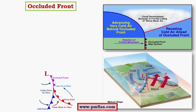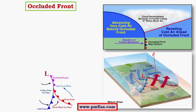Occlusion is simply the total upliftment of the warm air mass by the cold air mass. In the front region we see the formation of cumulonimbus clouds, and in the other front region we see the formation of nimbostratus clouds. As the cold air mass pushes at greater speed, it outpaces the warm air mass and completely uplifts the warm air in that region.